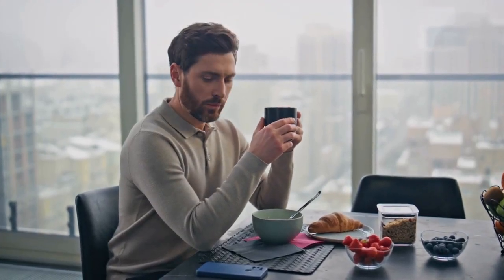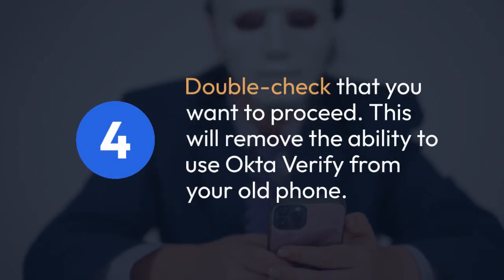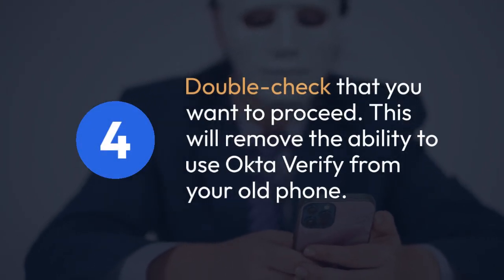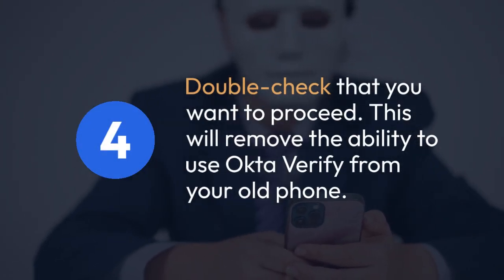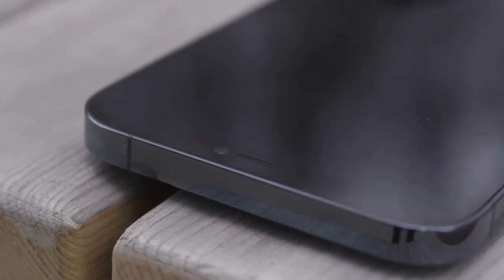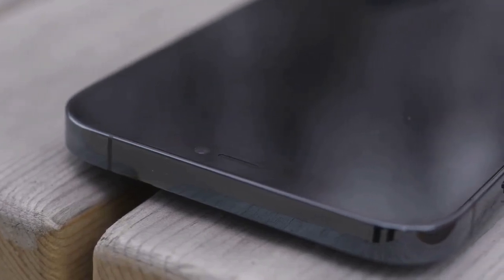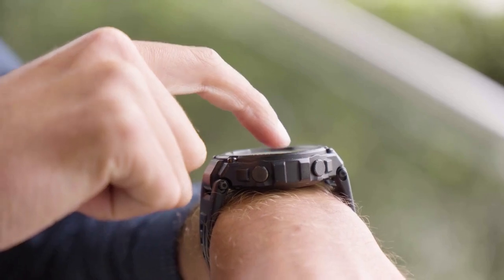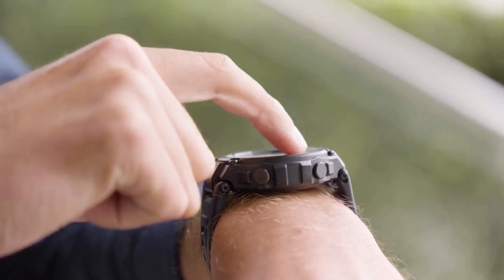4. Okta will typically ask for confirmation before deactivation. Double check that you want to proceed, as this will remove the ability to use Okta Verify from your old phone. 5. Once deactivated, delete the Okta Verify app from your old phone. Now you can move on to your new phone.